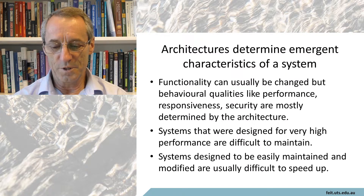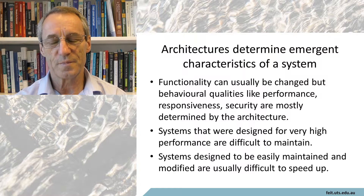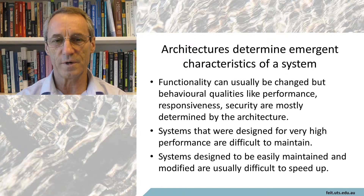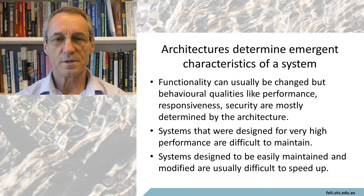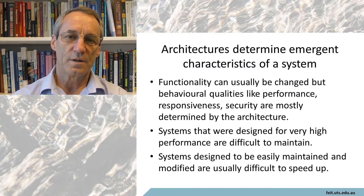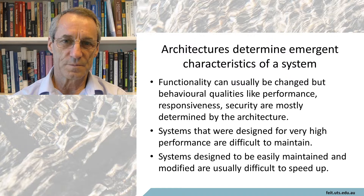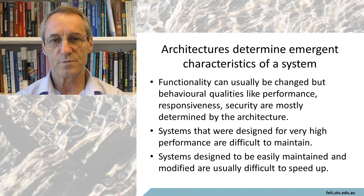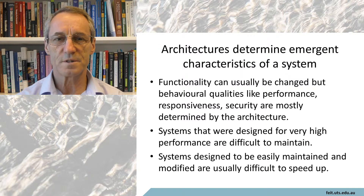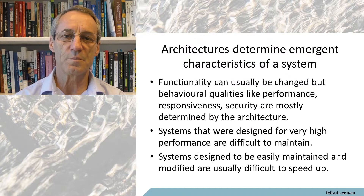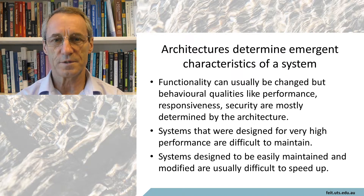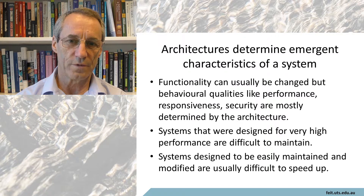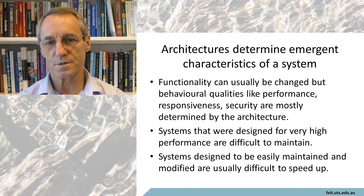Architectures do determine emergent characteristics of a system. Point functionality is usually provided in very specific cause-and-effect forms. Whereas the behavioural characteristics of a system — things like security, modifiability, performance, usability, and testability — tend to be more emergent properties; that is, a combination of things that collaborate and produce these effects. That's one of the things that the architecture introduces and constrains.